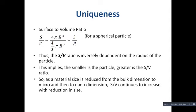In order to understand that, we need to understand a topic called surface-to-volume ratio. To understand it in a simple way, let us consider a spherical particle. We need to find the ratio of surface area to volume. For a spherical particle, the surface area is 4πr², where r is the radius, and the volume is (4/3)πr³.